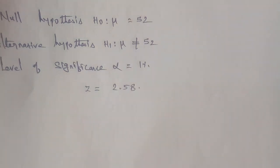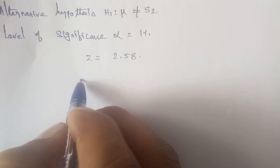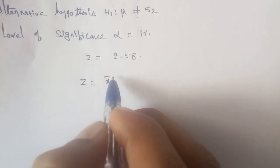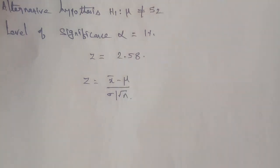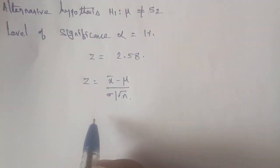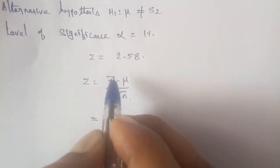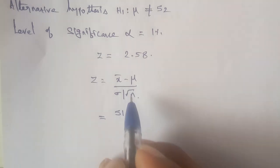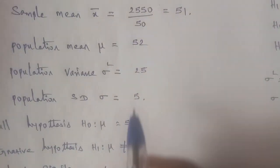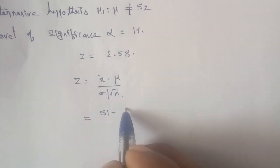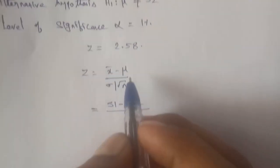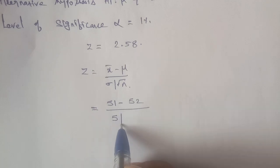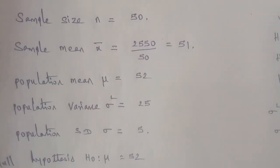Applying the formula: Z = (X̄ - μ₀) / (σ / √n). Substituting the values: X̄ = 51, μ₀ = 52, σ = 5, n = 50.